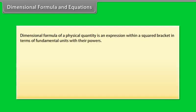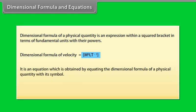Dimensional formula and equations. Dimensional formula of a physical quantity is an expression within a squared bracket in terms of fundamental units with their powers. Let us take an example. Dimensional formula of velocity is equal to under brackets M to the power zero L T to the power minus one. It is an equation which is obtained by equating the dimensional formula of a physical quantity with its symbol. Let us take an example.